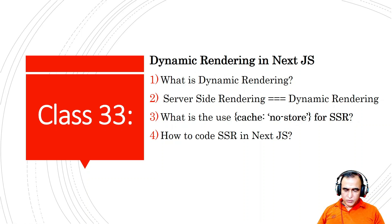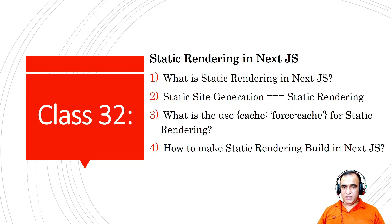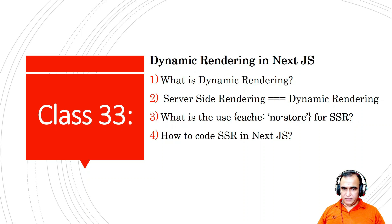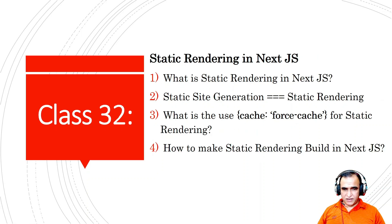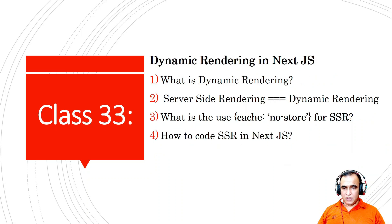There are three types of rendering. Static site generation has been renamed to static rendering. The second one is dynamic rendering — it was server-side rendering in Next.js 12 and earlier versions, but the name has now been changed to dynamic rendering. I explained static rendering in the previous video, including how to implement it in Next.js 13 using cache force-cache. Now in this video I am going to explain dynamic rendering in Next.js 13.